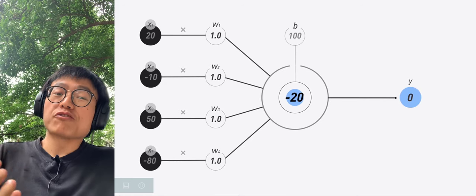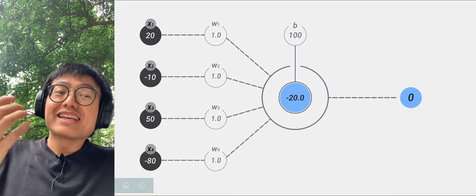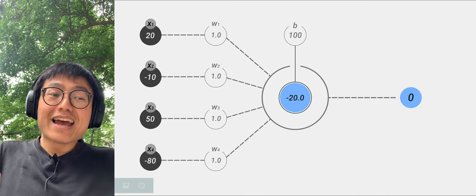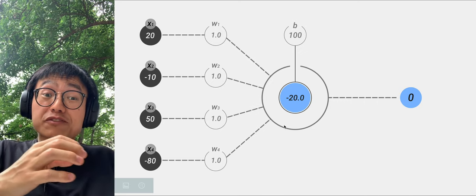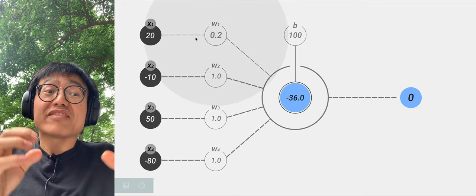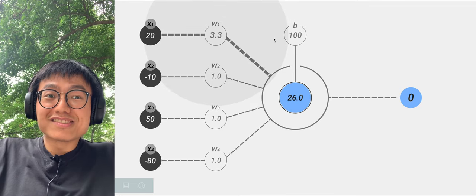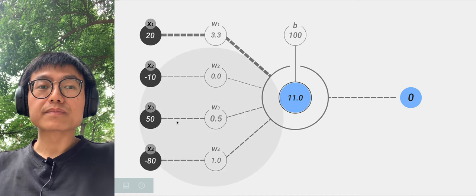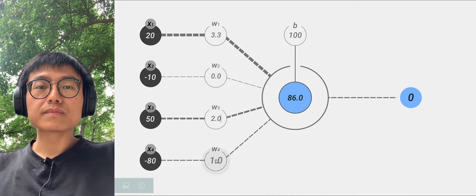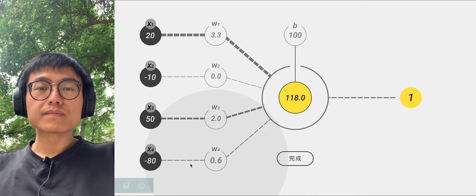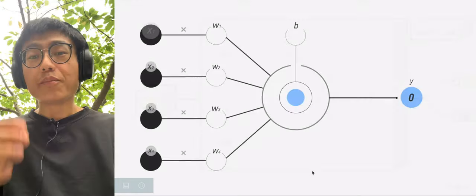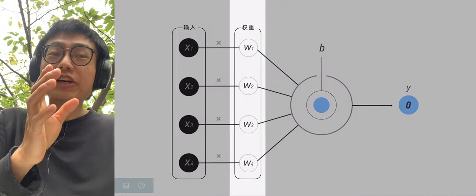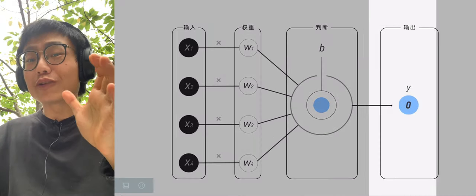Suppose we now have 4 dendrites. These are the values of 4 W and B. I can adjust the weights of these 4 dendrites to activate the neurons. Please remember this model: input X with W, judge threshold B, output Y.